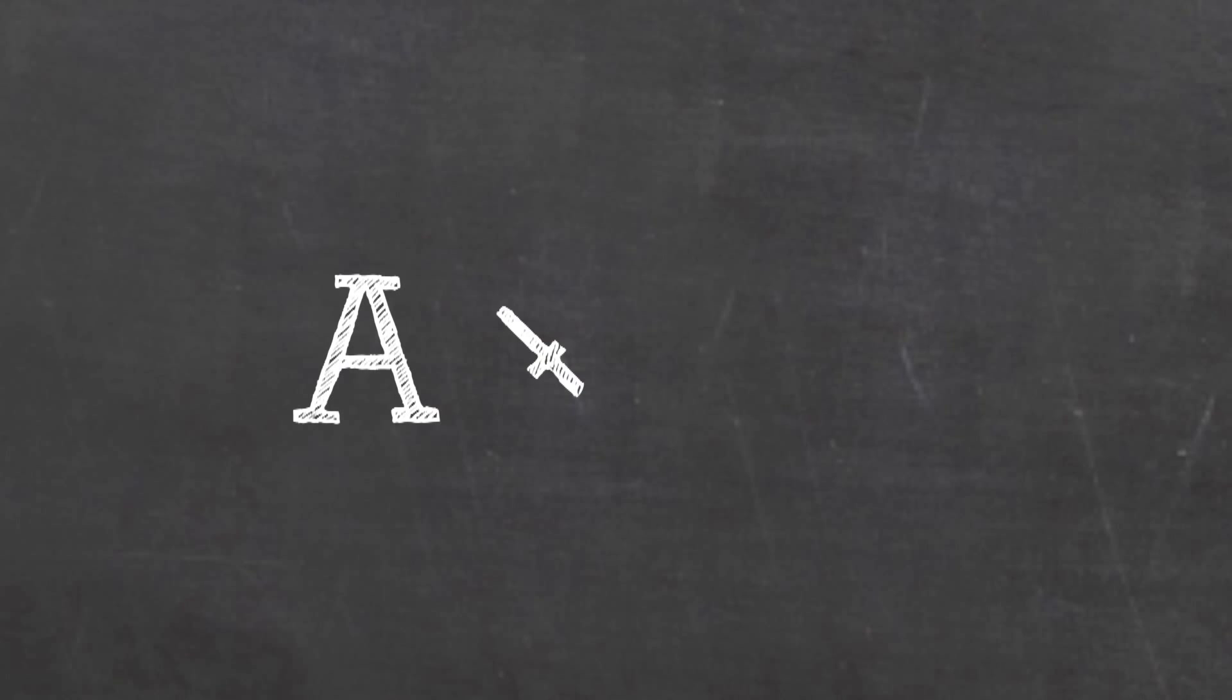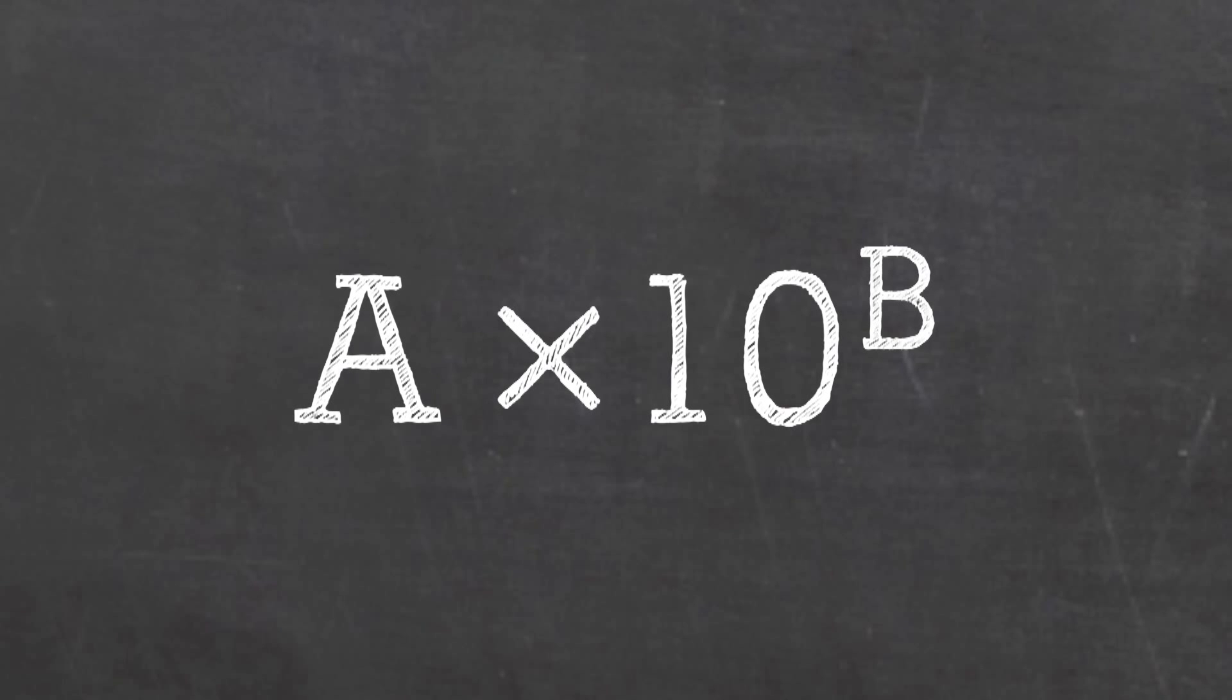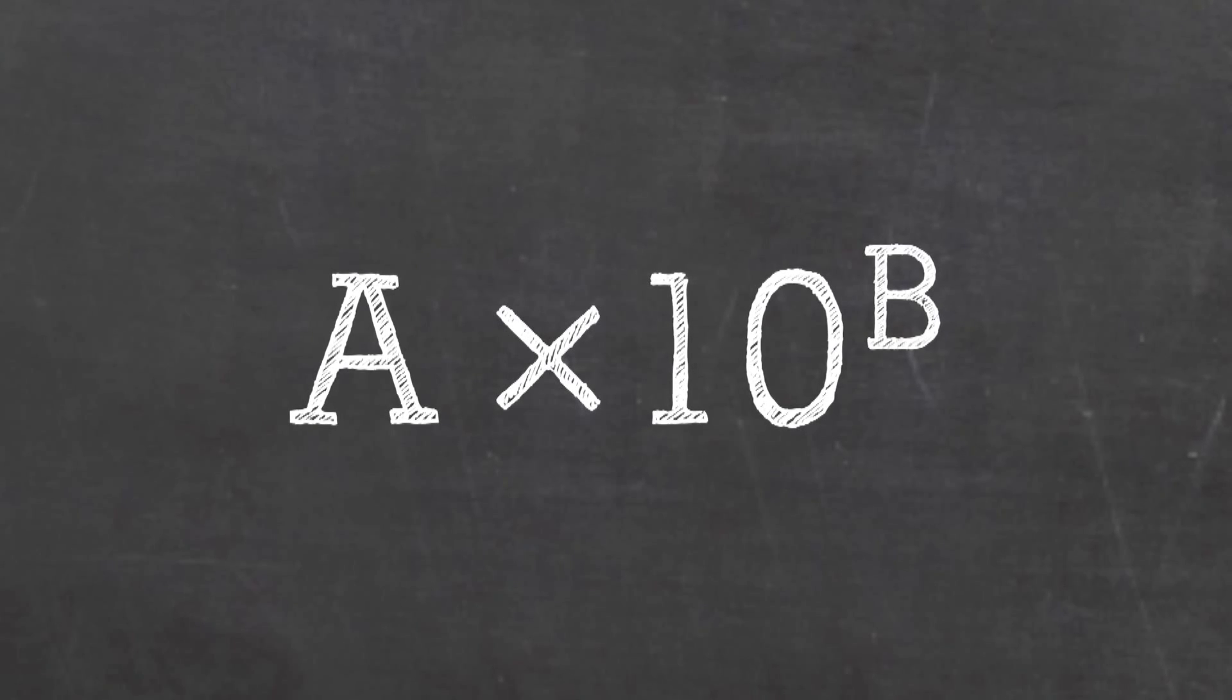The basic form of scientific notation is a number, A, multiplied by 10 to the power of another number, B. B tells you how many times 10 should be multiplied by itself.